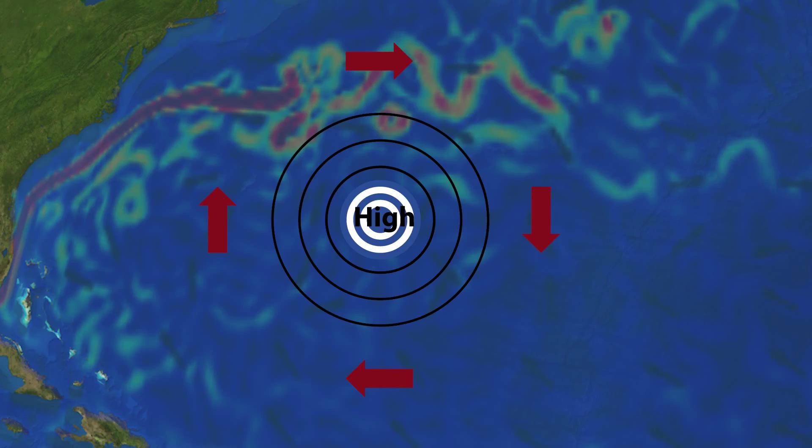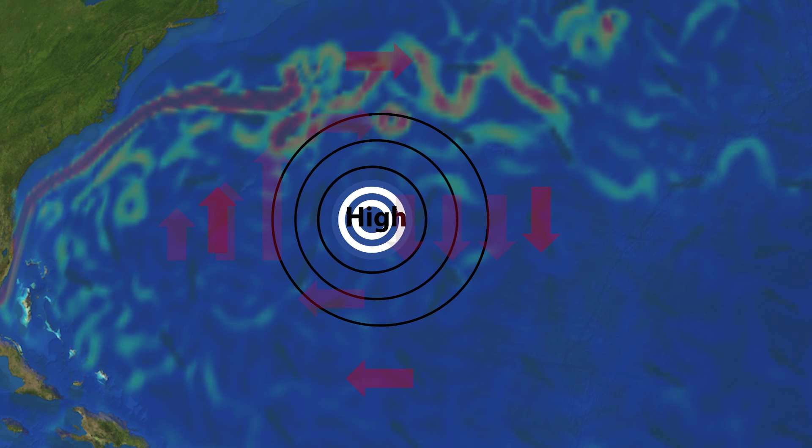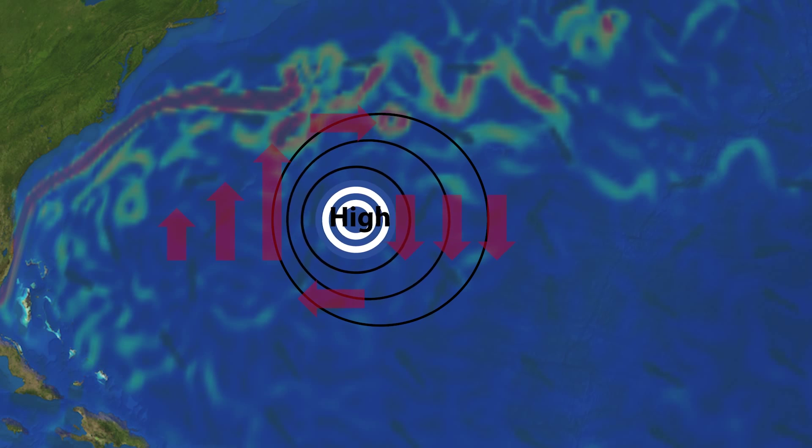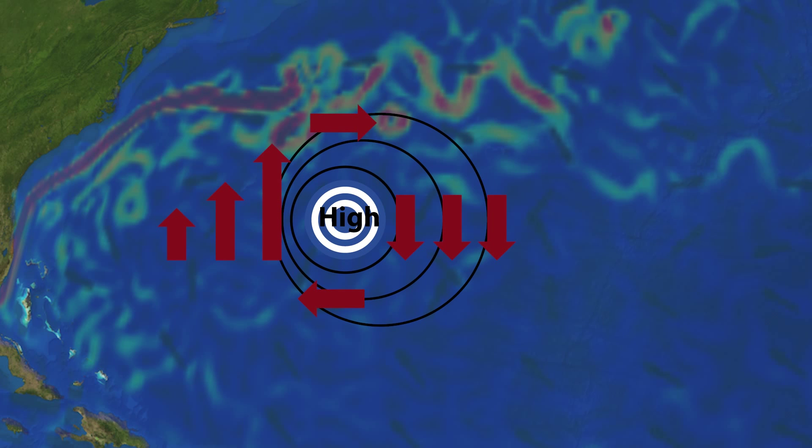Due to the variation of Coriolis with latitude, strong western boundary currents are formed through a process known as westward intensification. Associated with this, the high pressure centre is shifted westward. In the North Atlantic Gyre, the resulting current is known as the Gulf Stream.